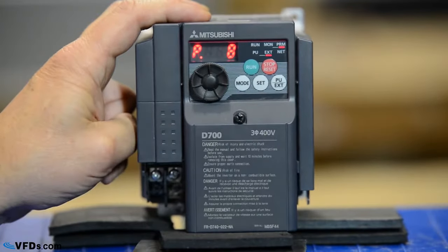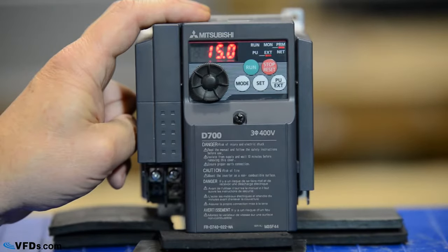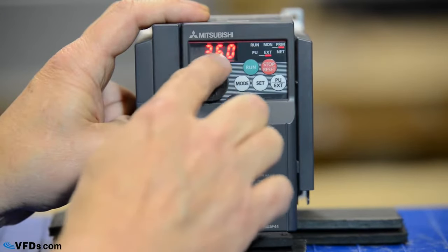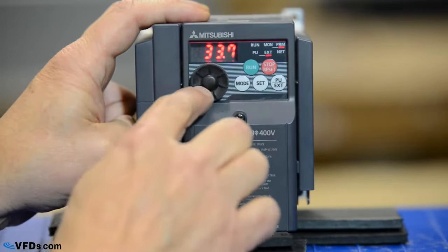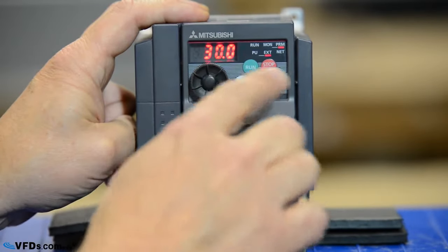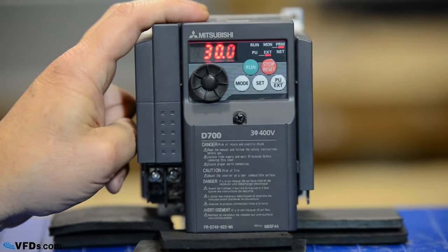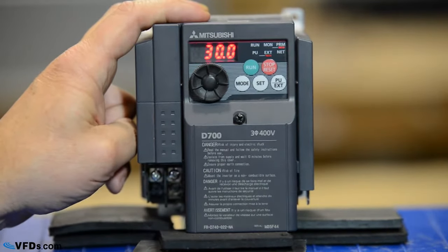My next parameter is parameter 8. That's my deceleration time. I don't want to slow down too fast, so I'm going to change my deceleration time up to about 30 seconds. Let me change this to 30. I press set again and it will now slow down from 60 hertz to 0 in 30 seconds.